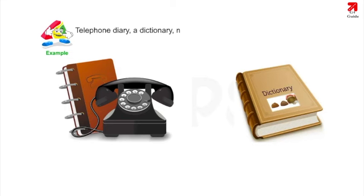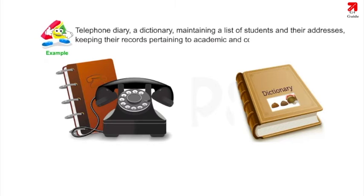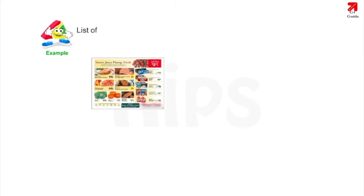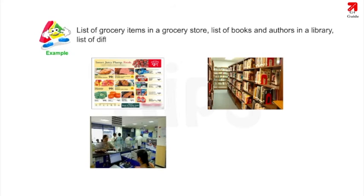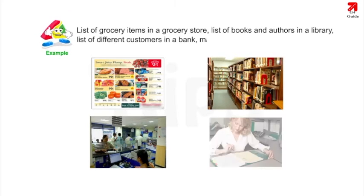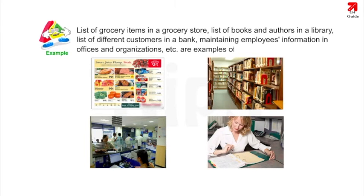Telephone diary, a dictionary, maintaining a list of students and their addresses, keeping records pertaining to academic and co-curricular achievement, list of grocery items in a grocery store, list of books and authors in a library, list of different customers in a bank, and maintaining employee information in offices and organizations — these are all examples of different types of database.